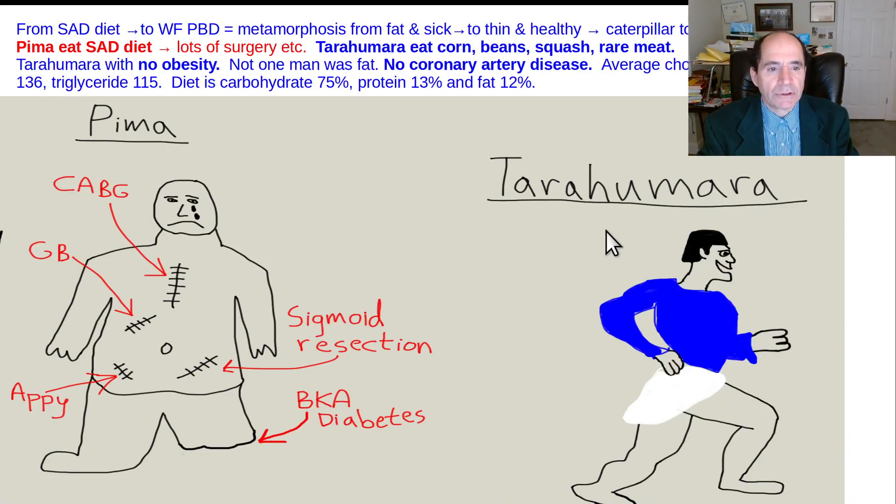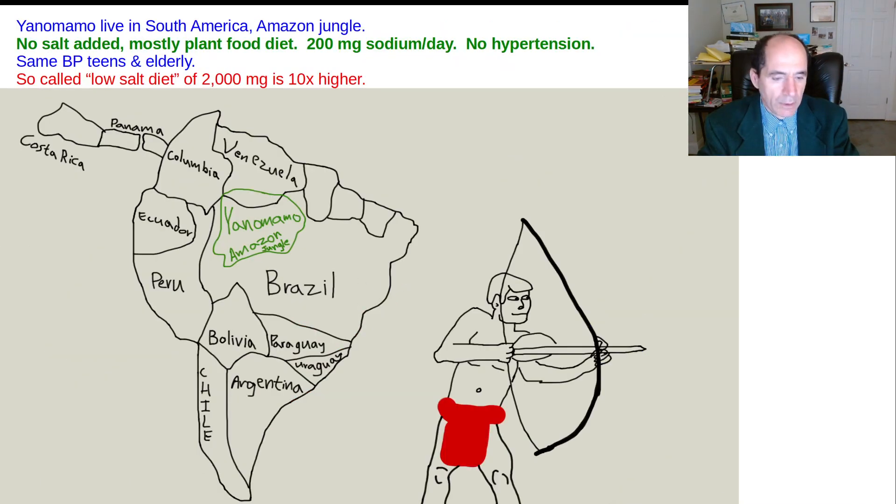Then you've seen all these pictures before. The Tarahumara in northern Mexico eat their old fashioned diet, a plant based diet. They're skinny and energetic. They run 100 miles in two days. They're ultra marathoners. The Pima population separated from the Tarahumara in 1848. Now eat the SAD diet. They demographically were matched originally, but now they're real fat and sick in comparison.